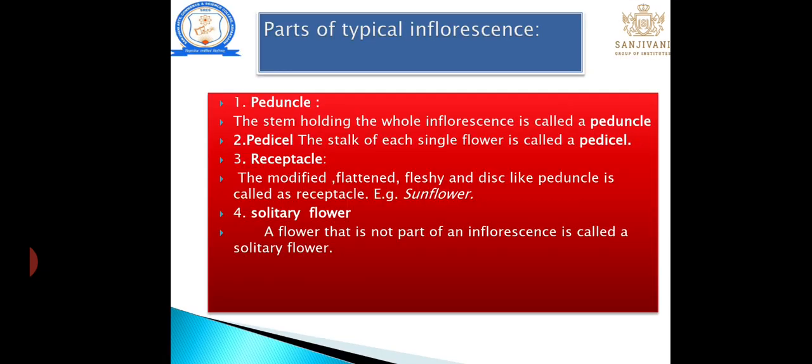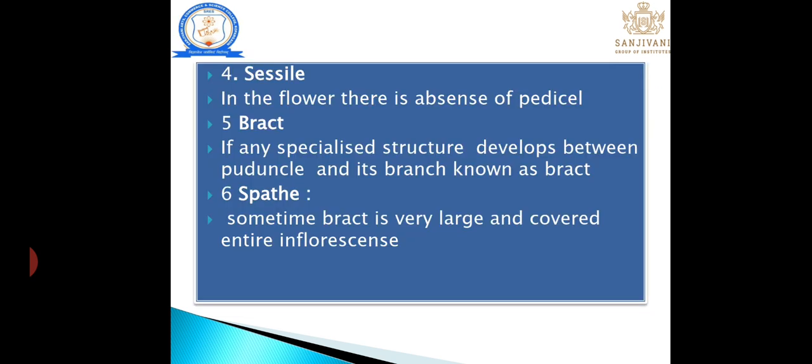Parts of inflorescence: First is the peduncle — the stem holding the inflorescence. Next is the pedicel, the stalk of the individual flower. The receptacle is the modified, flattened, fleshy disc-like structure. In sunflower, a disc is present which is known as the receptacle. A solitary flower is a flower that is not part of an inflorescence — such as a flower absent of a stalk or pedicel.